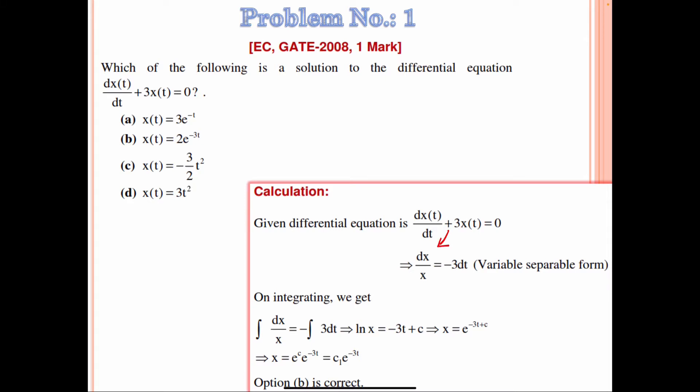We rewrite it as dx/x = −3 dt. When we have variable separable form, the solution can be evaluated by integrating both sides. So integrating, we get the integral of dx/x equals the integral of −3 dt, which gives log x = −3t + c.